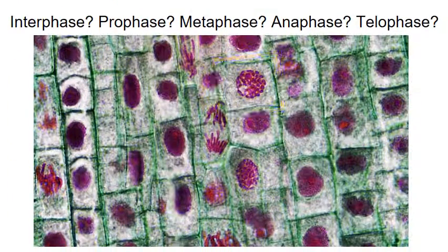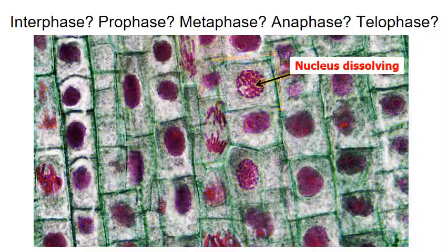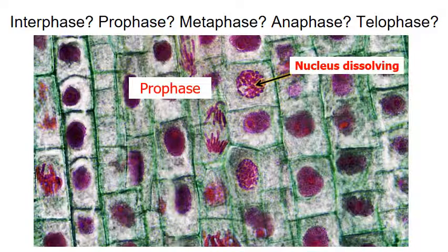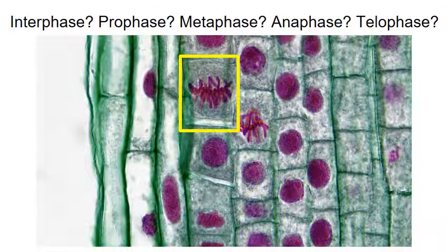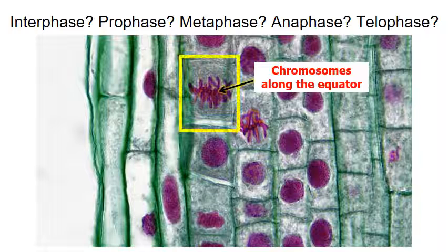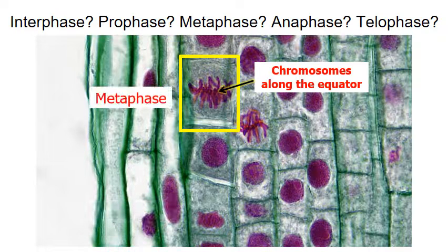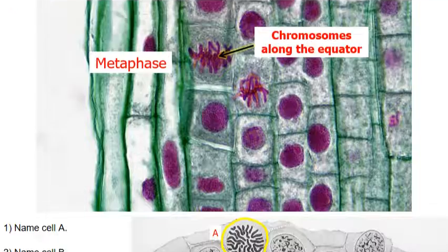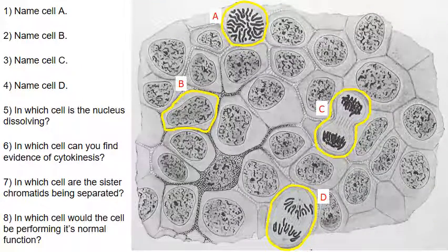Another highlighted cell shows the nucleus dissolving — the conclusion is prophase. The last highlighted cell shows chromosomes mostly aligned along the equator or middle line of the cell — that is metaphase.